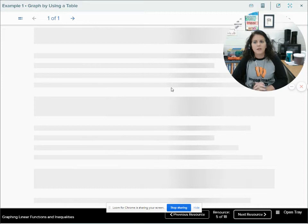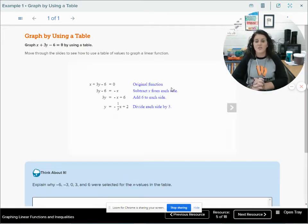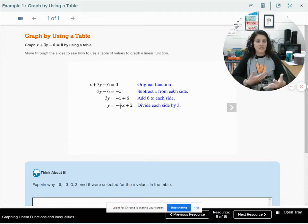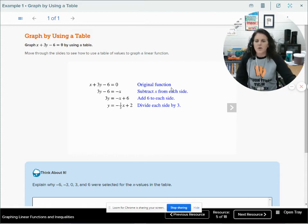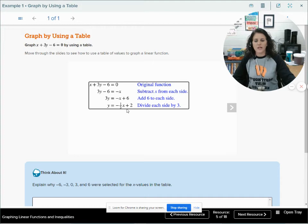So let's look at example 1 to graph this using a table. This is kind of a summary of several lessons that I would teach in Algebra 1 because you should have already seen this before. So, we're going to recap and we're going to put it all into one lesson. Well, actually two lessons. I'm going to break it up into two. But we're going to put it all into one big thought here. So, we're looking at this equation, x plus 3y minus 6 equals 0. That is my original function.